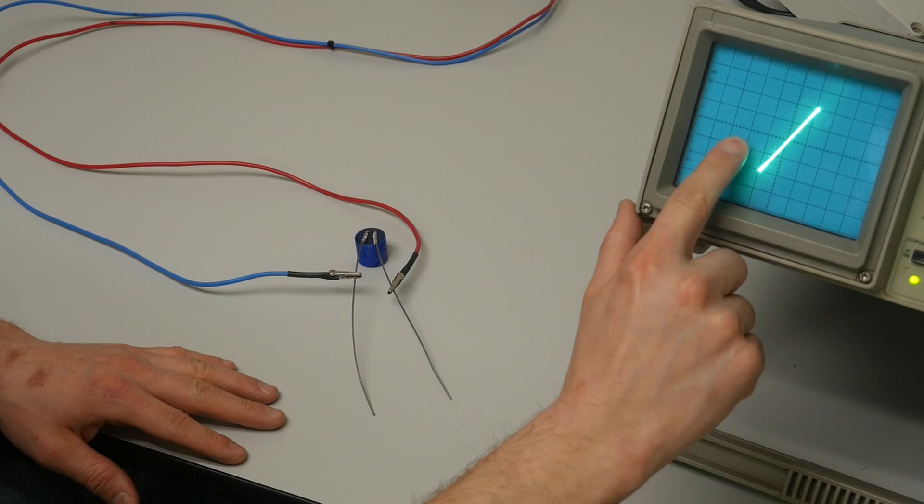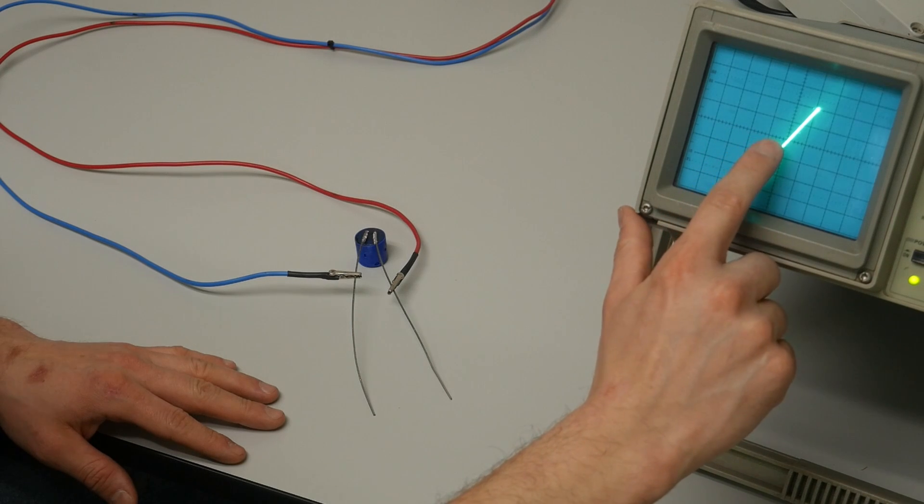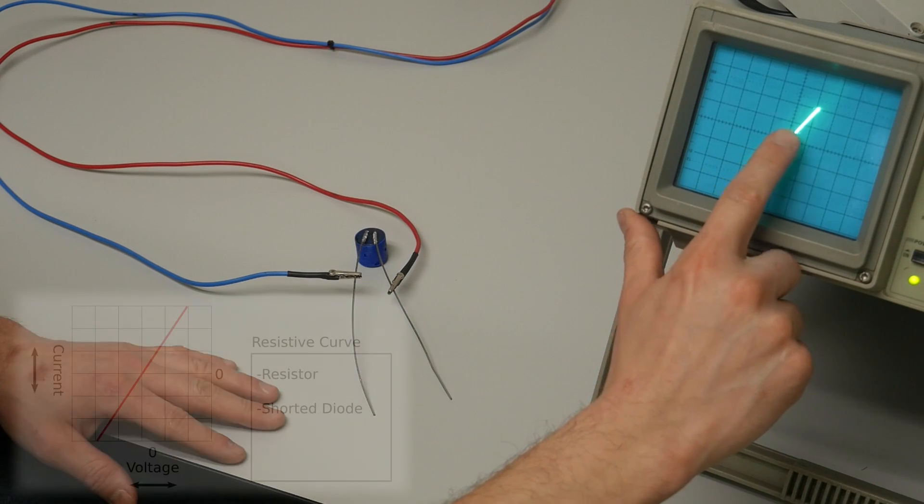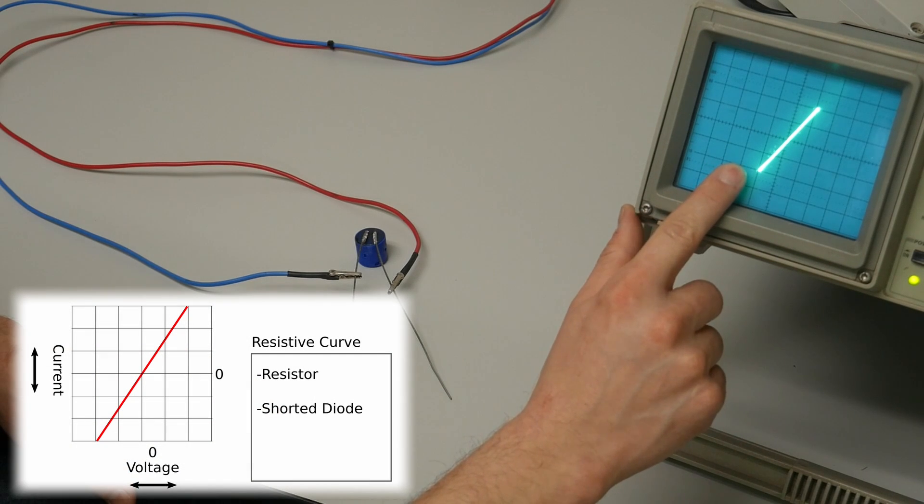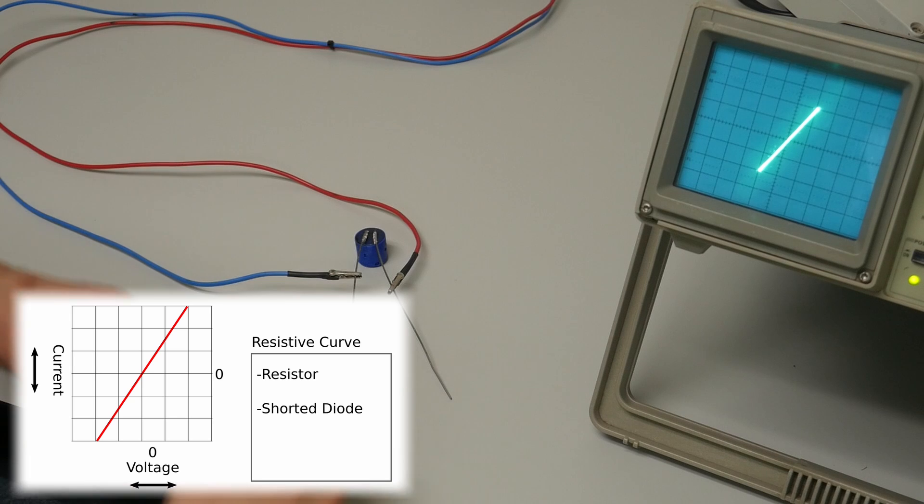This would happen both in the positive direction and the negative direction. Instead, as soon as we get any voltage, current starts to flow in both the positive direction and the negative direction. This is indicative of a resistive behavior, which is what you see in a shorted diode.